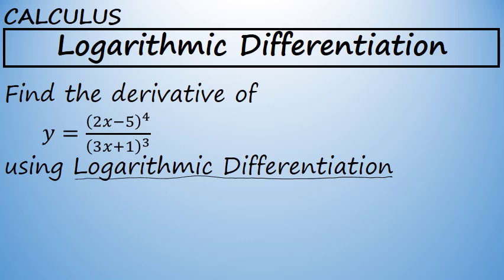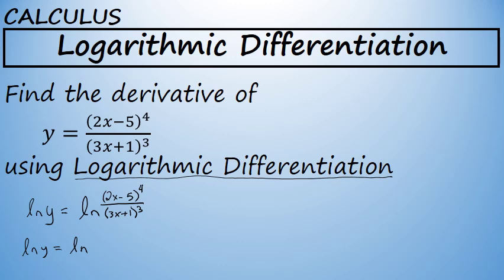Logarithmic differentiation is based on taking the natural log of both sides of an equation as the first step. The reason this is advantageous is because if you take the natural log of the quotient — 2x minus 5 to the 4th power over 3x plus 1 to the 3rd power — this quotient can be broken apart into smaller pieces using the properties of logarithms. The natural log of this fraction can be expanded to be written as the natural log of 2x minus 5 to the 4th power minus the natural log of 3x plus 1 to the 3rd power.